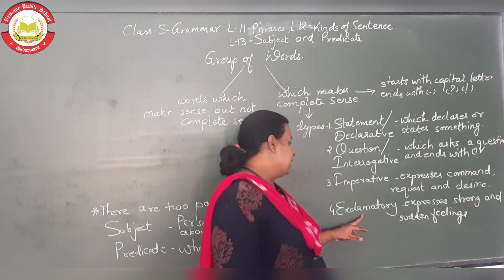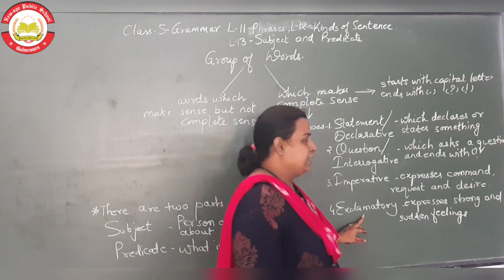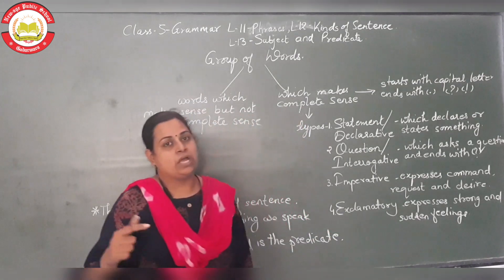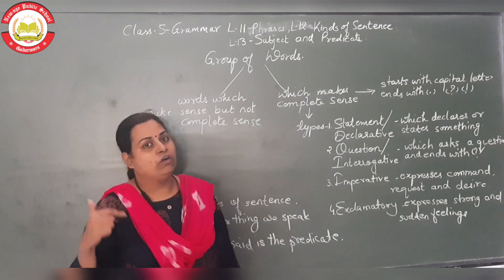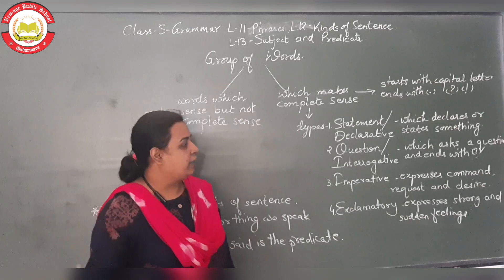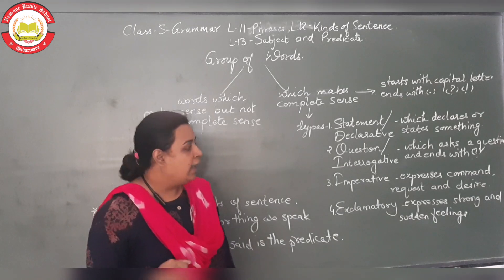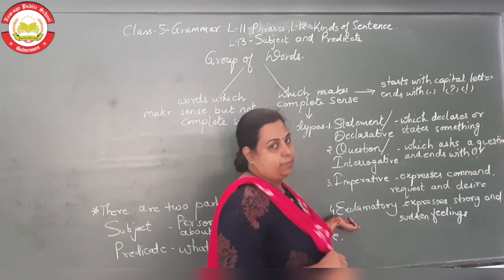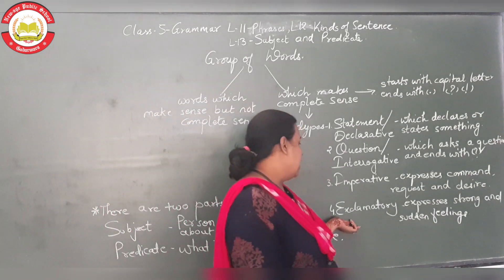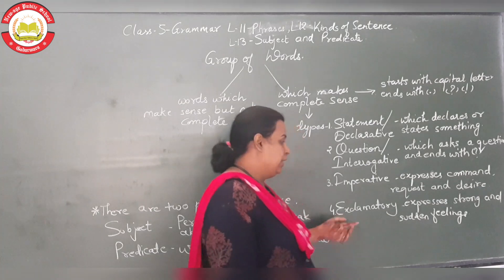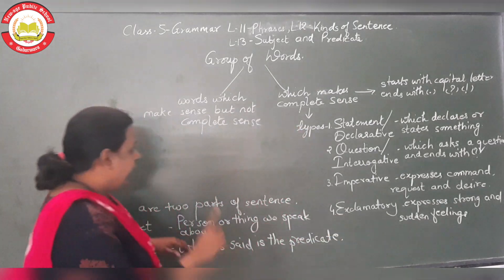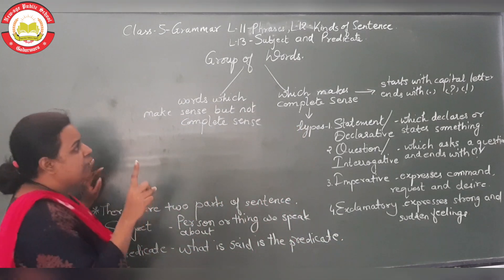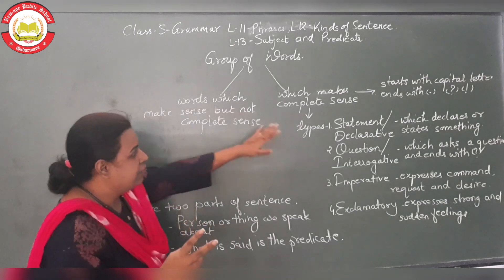The last type is an exclamatory sentence. An exclamatory sentence is used to show a strong feeling or emotion, and it ends with an exclamation mark and starts with a capital letter. Remember that a sentence always has two parts.